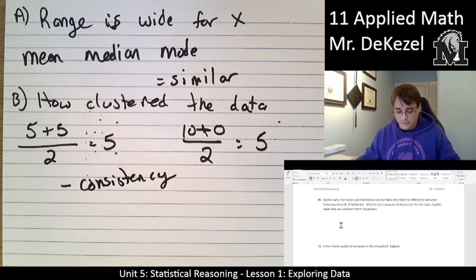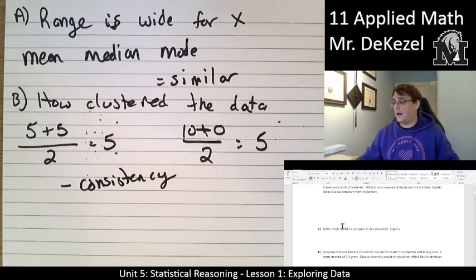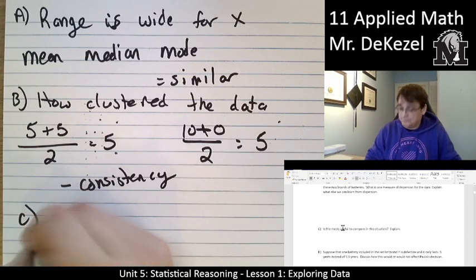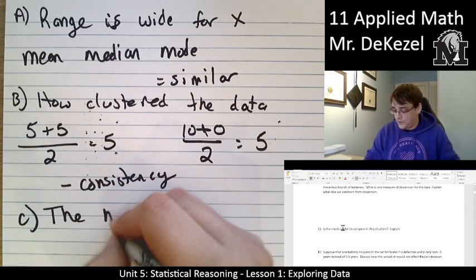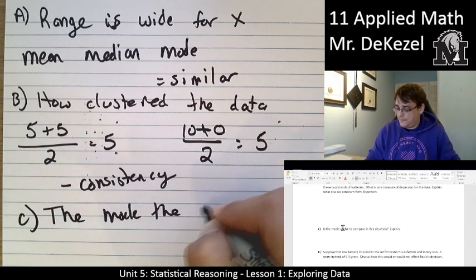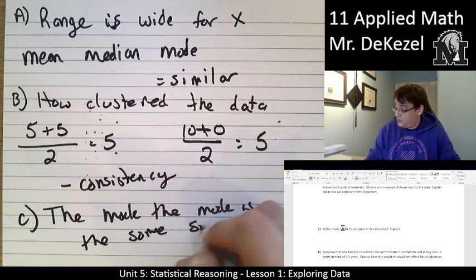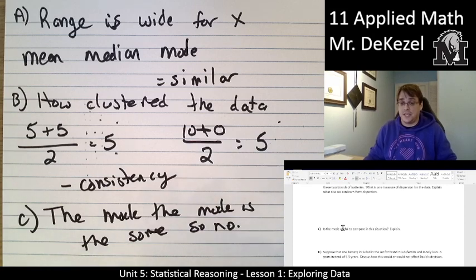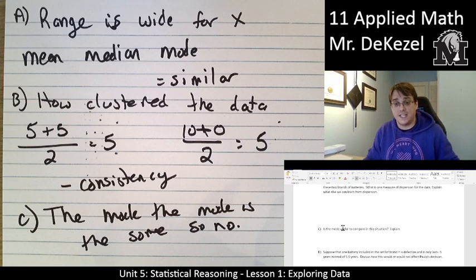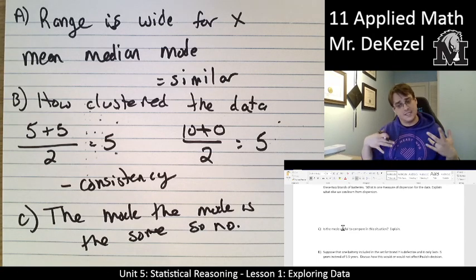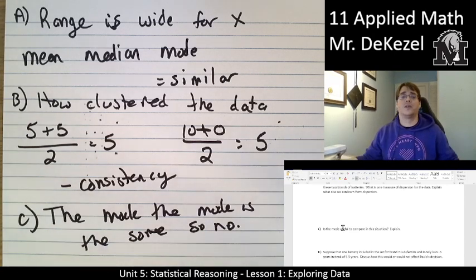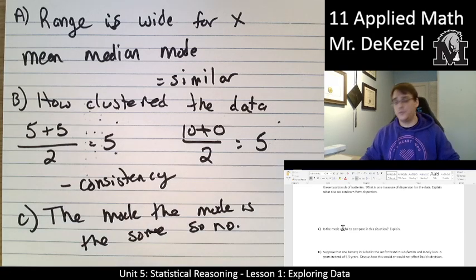C. Is the mode useful to compare in this situation? It really is not. They're all the same. The mode is the same for both. It really isn't useful to look at when it's the same between each sets of data. We know that the data is not the same. We looked at it on the plot. But the mode is the same. The median is the same. The mean is the same. How do we analyze this data? That's where all these new tools are going to start to come in, new ways to think about numbers.